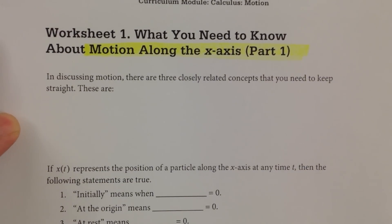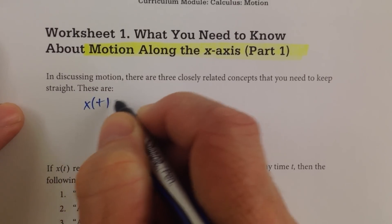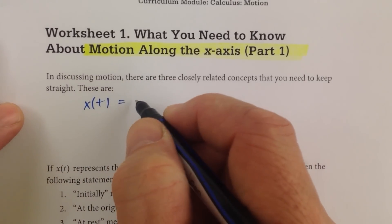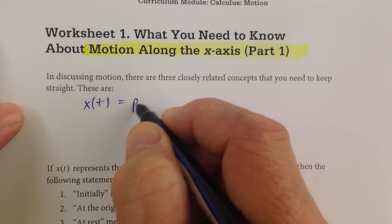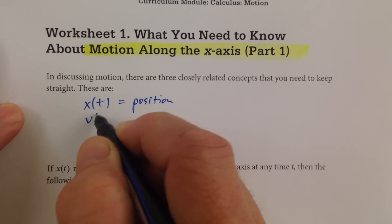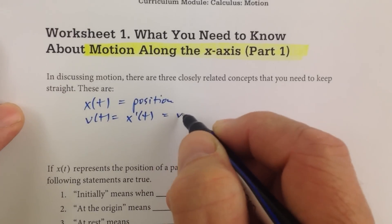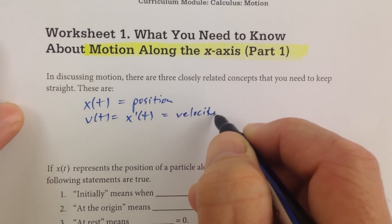Now, if you didn't pause the video and copy those down, or if you didn't have enough time to copy them down, let's keep it simple. x(t) is the position. v(t) is the derivative of the position, that's the velocity, at time t.